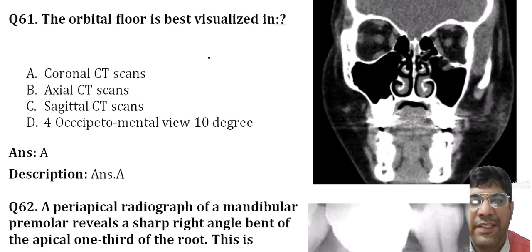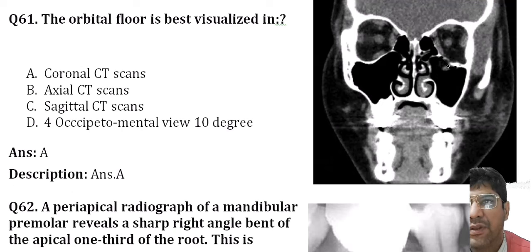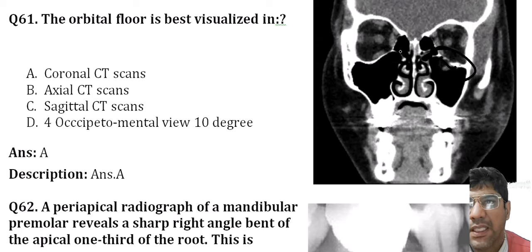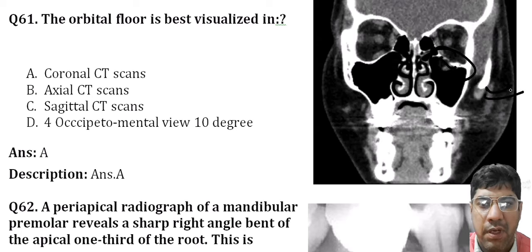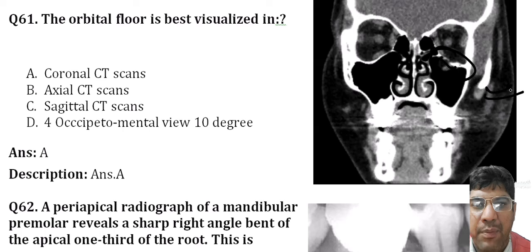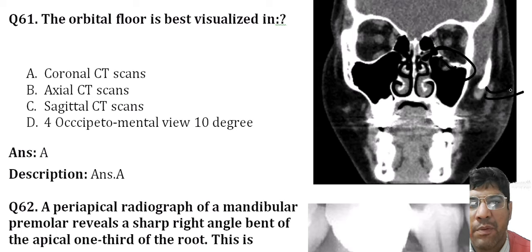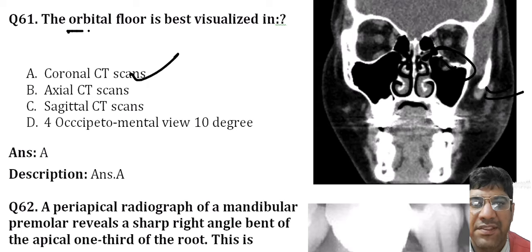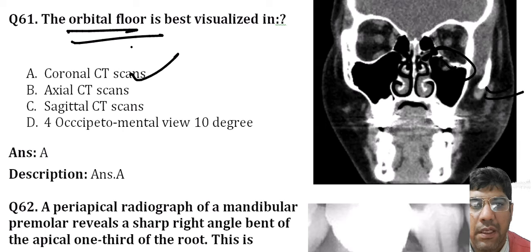The orbital floor is best visualized in coronal CT. Coronal scans are taken from a front-to-back perspective, and in orbital imaging, coronal CT provides a view of the orbital floor and its structures. Axial scans are taken from a top-to-bottom perspective, and sagittal CT scans are taken from a side-to-side perspective.